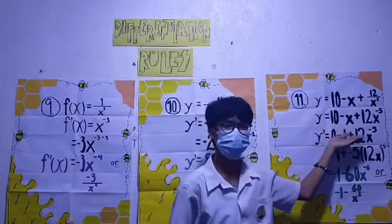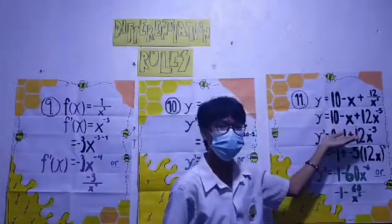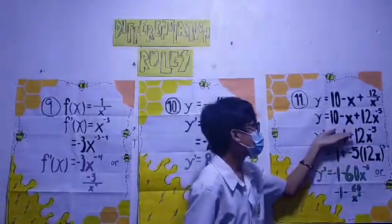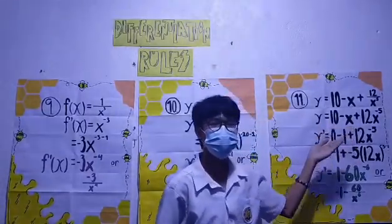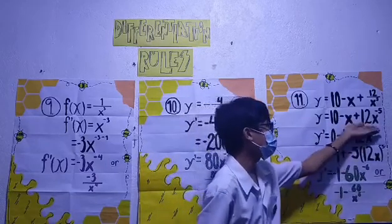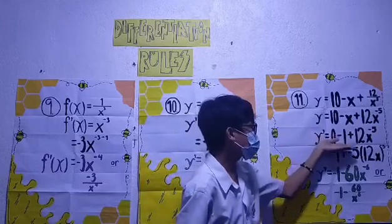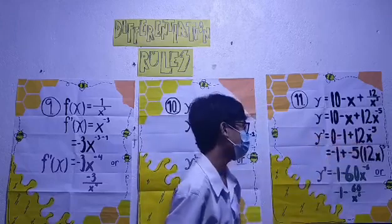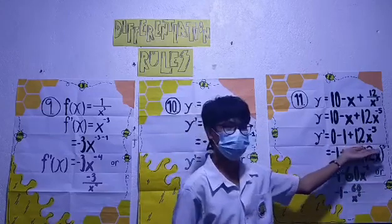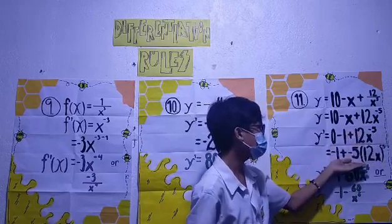And for our negative x, we will apply the Power Rule. x raised to 1, minus 1 is equals to 0. So any value raised to 0 is equals to 1, so it will be 1. And we will just copy 12x raised to negative 5. So our y prime will be 0 minus 1 plus 12x raised to negative 5. We will just copy negative 1, and we will apply the Power Rule here. We will copy negative 5 and put it right beside our positive 12x, and we will subtract our exponent by 1.